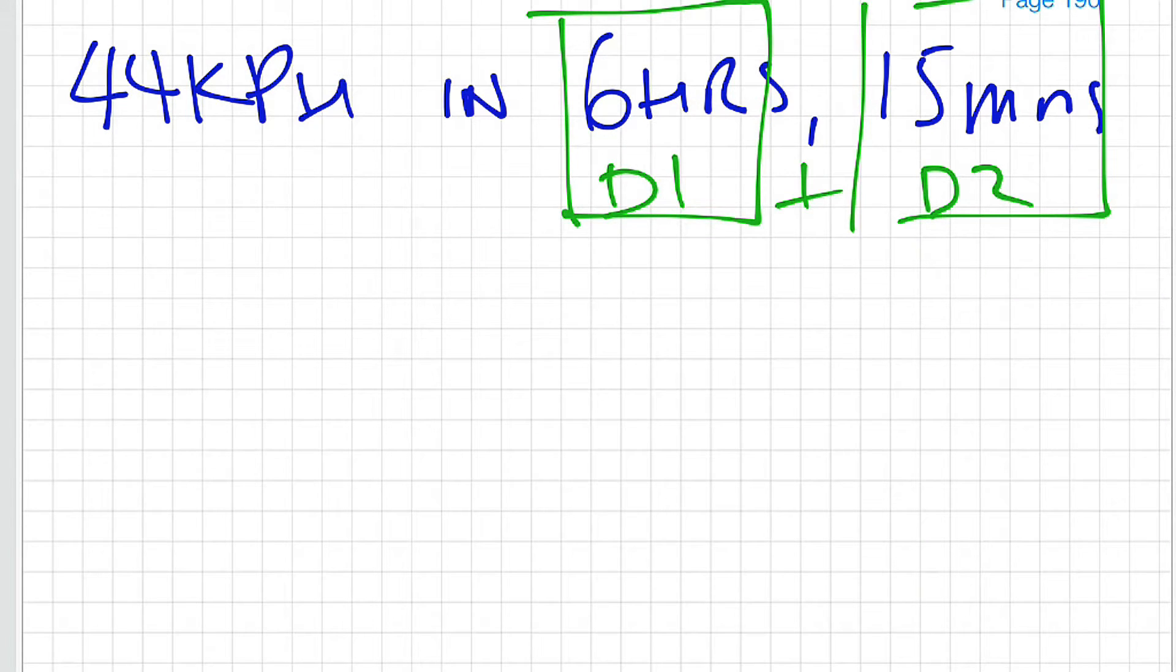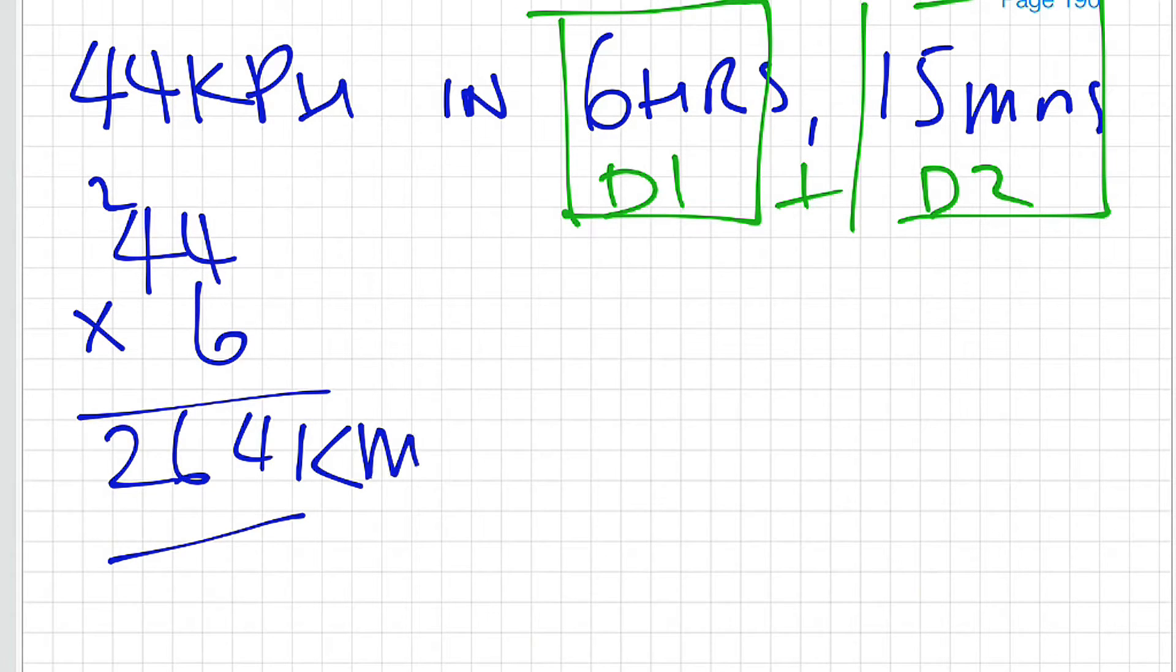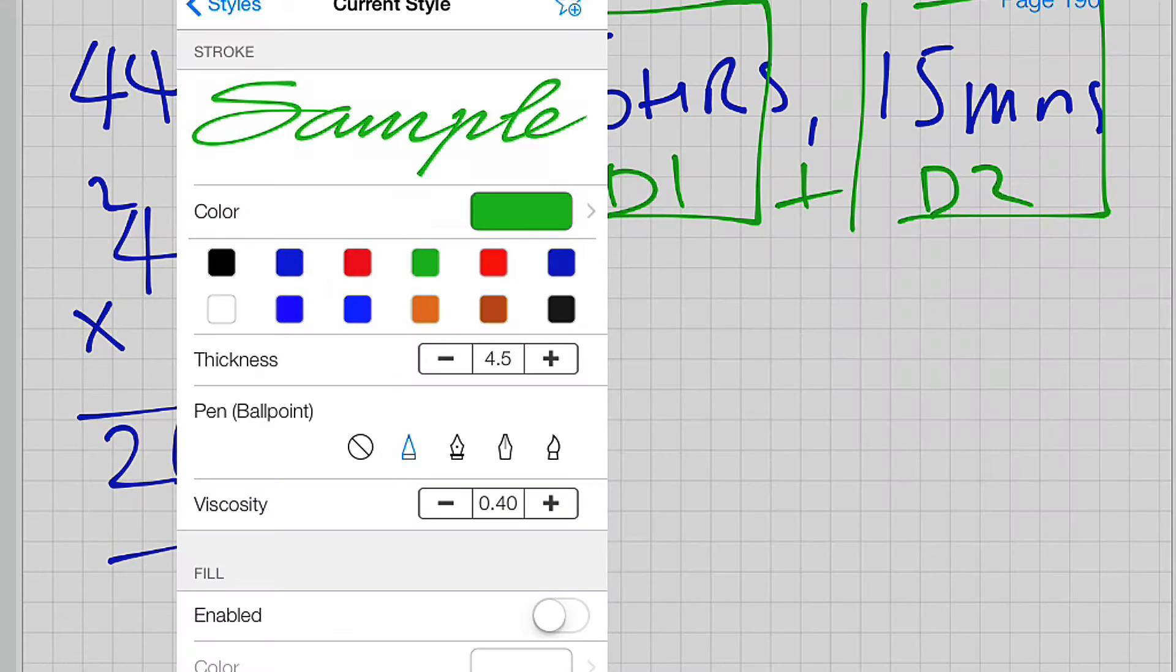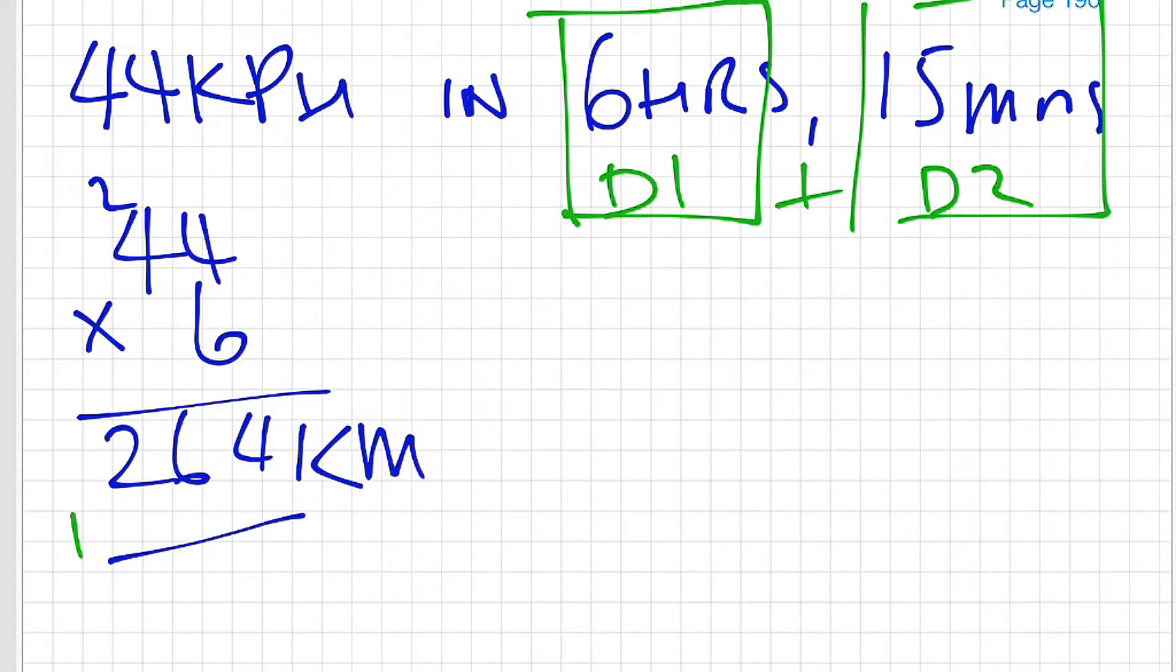The first equation becomes 44 km per hour multiplied by 6 hours. 6 times 4 is 24, 6 times 4 is 24 plus the 2 is 26. That gives me my kilometres automatically for D1.